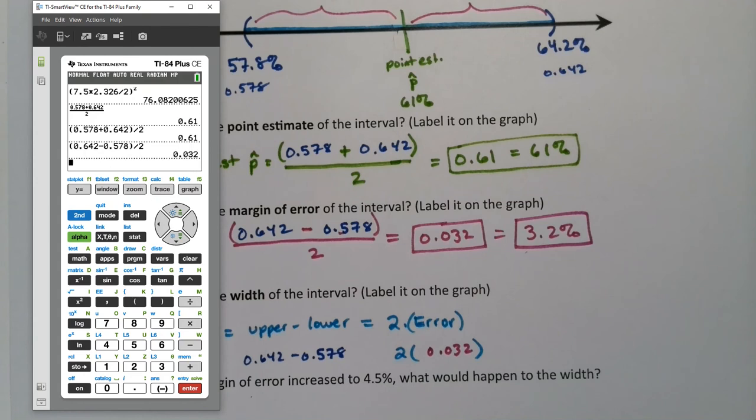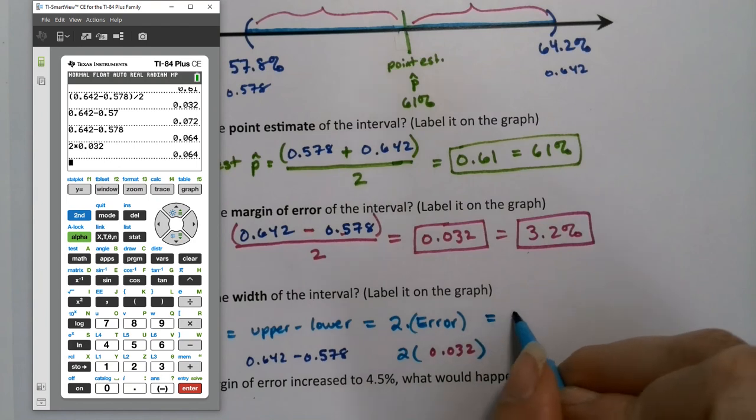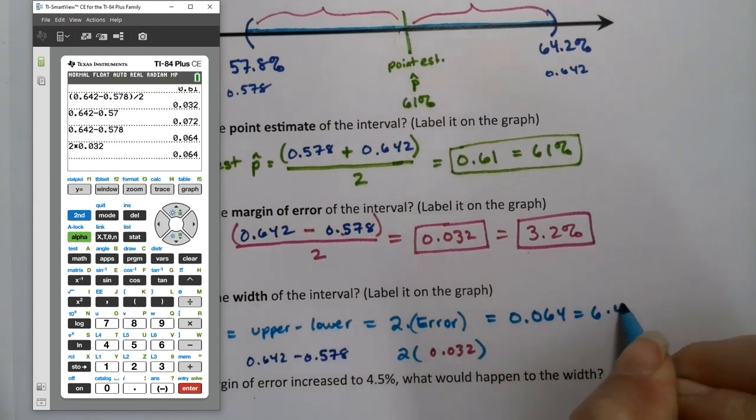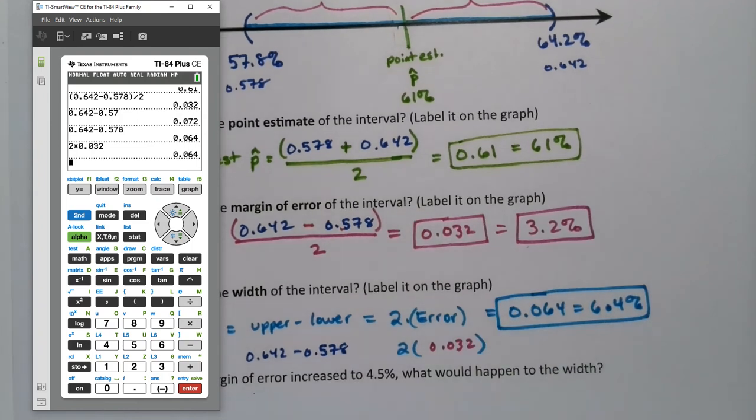Let me show it to you. So 0.642 minus 0.578, upper minus lower, that's the width. Two times 0.032. I didn't type my eight - I typed too fast and it doesn't register it on this program. There we go, 0.064, and then two times 0.032. There we go. See? Either way, it's 0.064 or 6.4%. Both are perfectly valid.